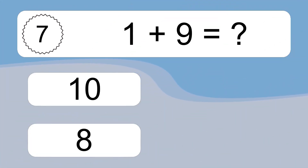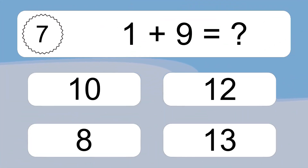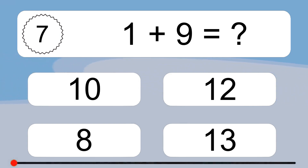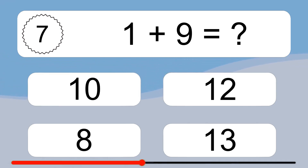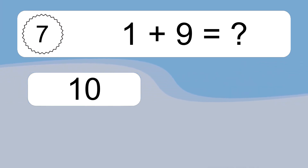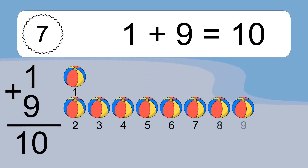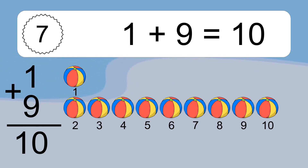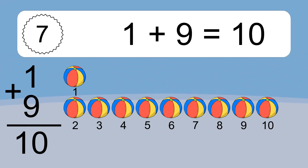1 plus 9 equals what? 1 plus 9 equals 10. Let's count it. 1, 2, 3, 4, 5, 6, 7, 8, 9, 10.